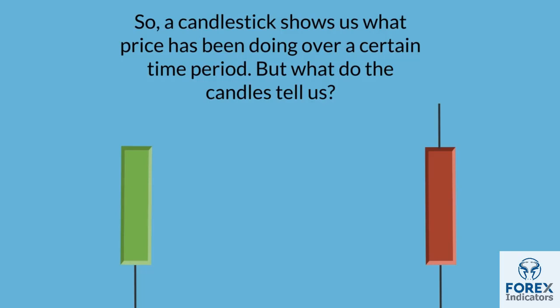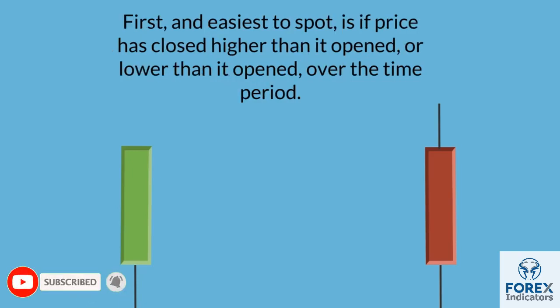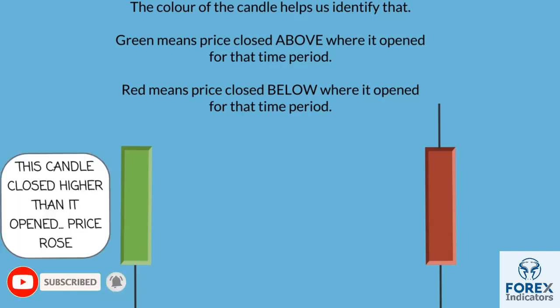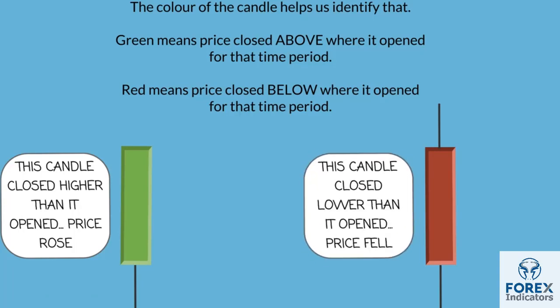So a candlestick shows us what price has been doing over a certain time period. But what do the candles tell us? First, and easiest to spot, is if price has closed higher than it opened or lower than it opened over the time period. The colour of the candle helps us identify that. Green means price closed above where it opened. Red means price closed below where it opened. This candle closed higher than it opened — price rose. This candle closed lower than it opened — price fell.